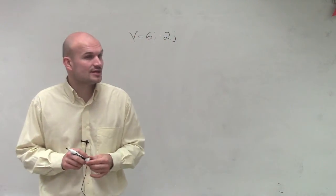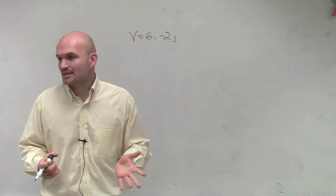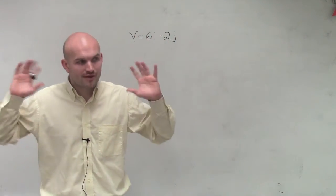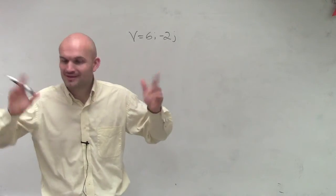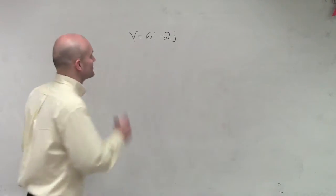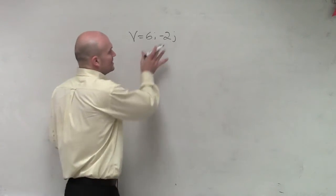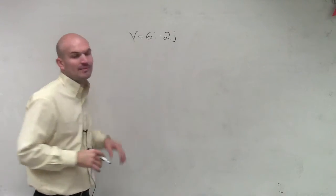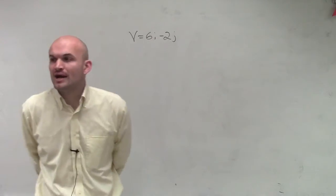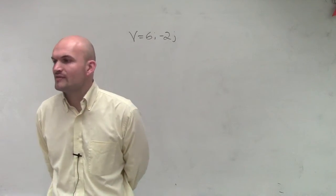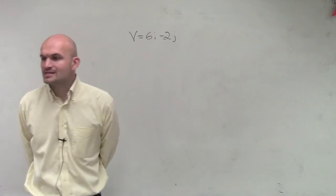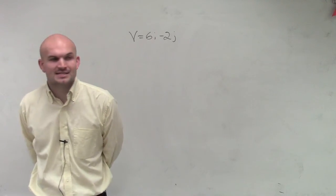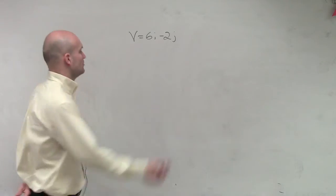One is that a unit vector has a magnitude of 1. So the next thing we also want to remember is: if we're given a vector as a linear combination, what does that represent as component form?